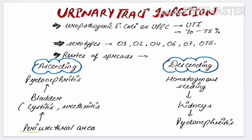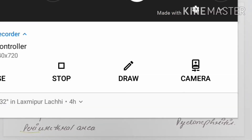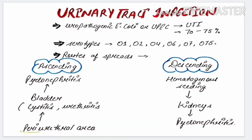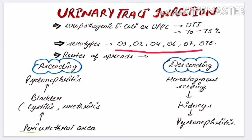Urinary tract infection is caused by uropathogenic E. coli, that is UPEC, which is the causative agent of UTI. It accounts for 70 to 75 percent of cases. The serotypes are O1, O2, O4, O6, O7, and O75. Now we will discuss the routes of spread of E. coli within the host.